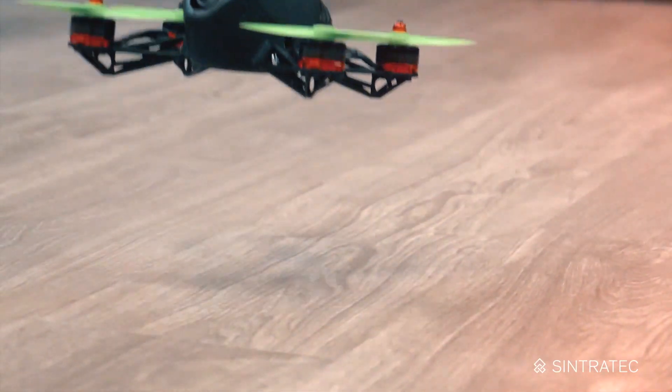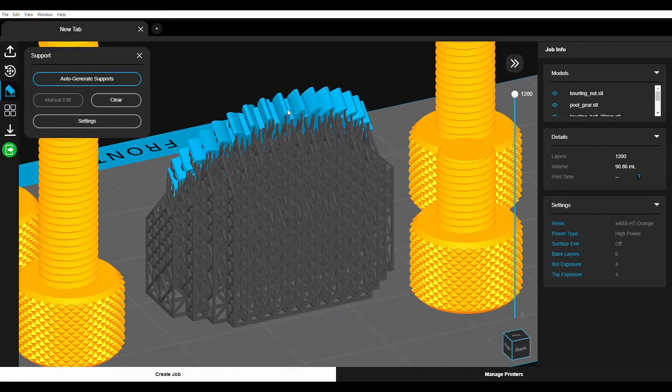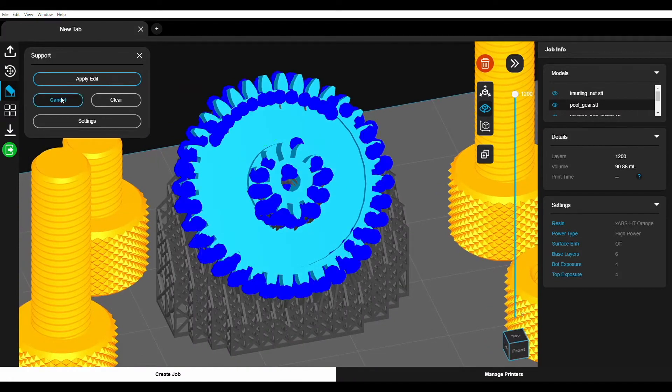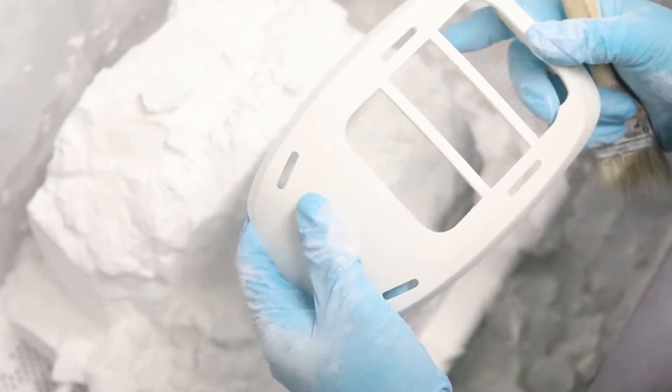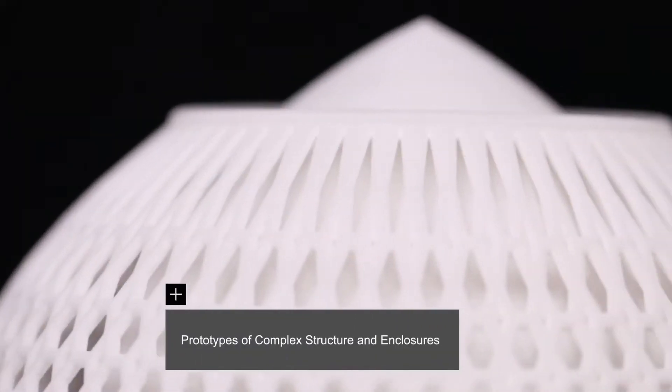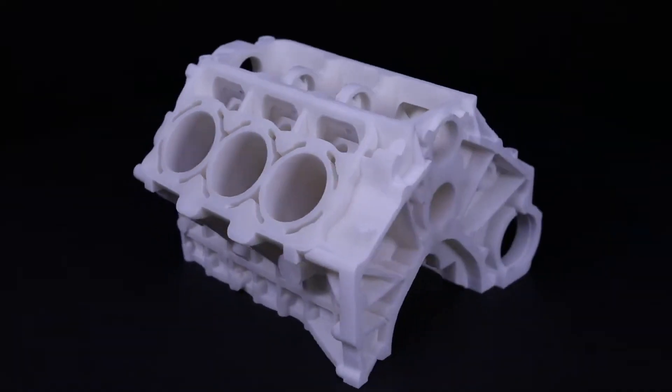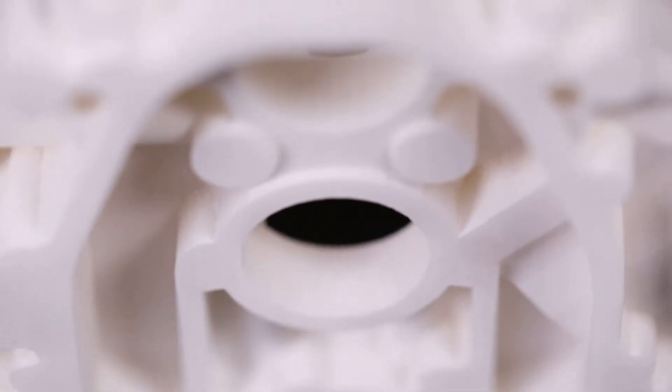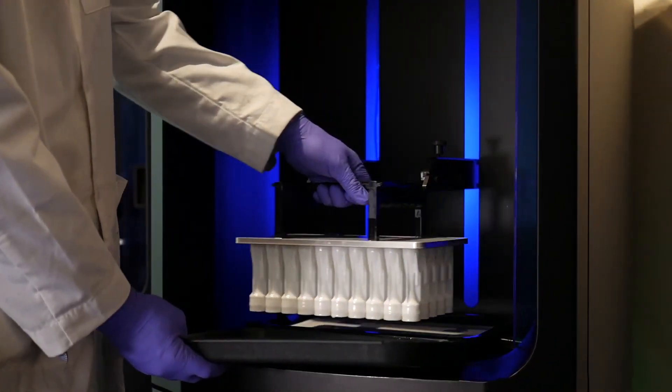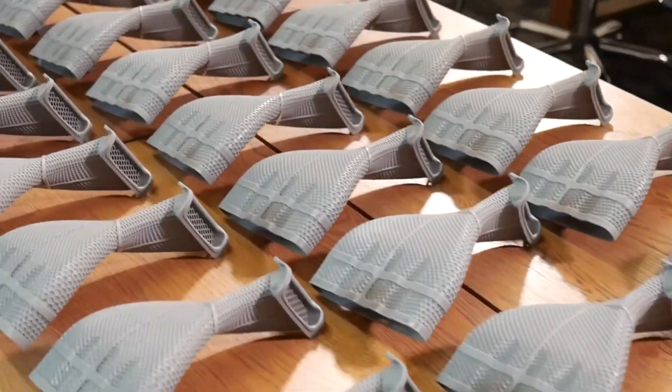3D printers are revolutionizing the way you manufacture things and will radically increase the speed of creating new inventions in the future. In today's video, we will be covering industrial selective laser sintering 3D printers, or SLS, which will create strong functional parts very quickly for high-tech industries such as automotive and medical device manufacturing.